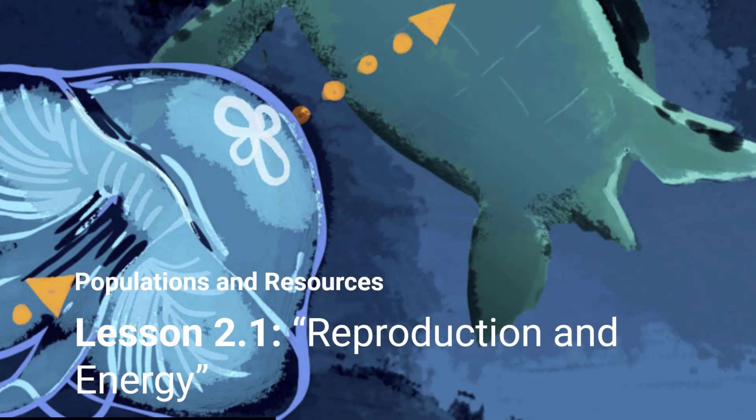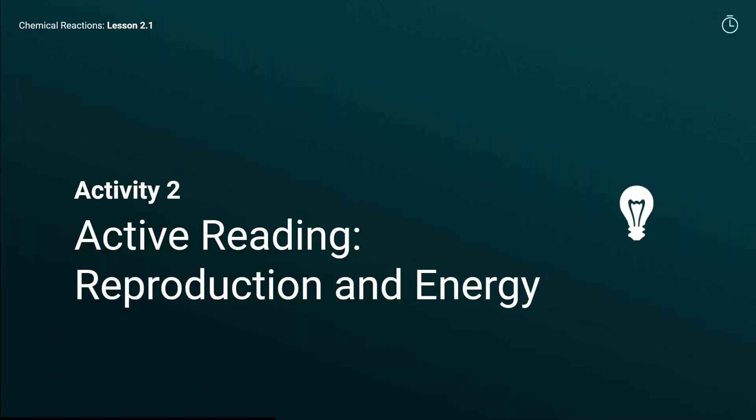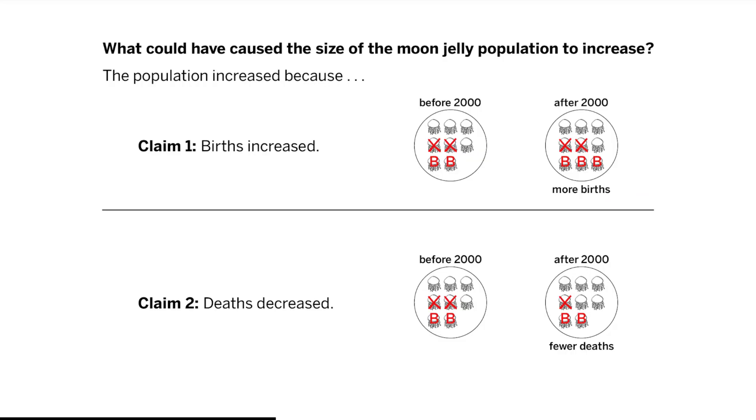Populations and Resources Unit, Lesson 2.1: Reproduction and Energy. Activity 2, Active Reading — Reproduction and Energy.